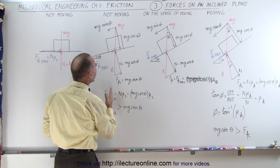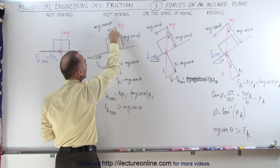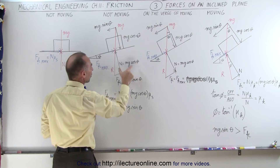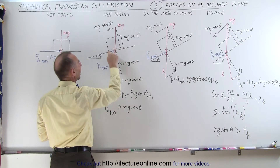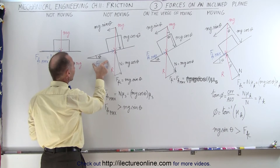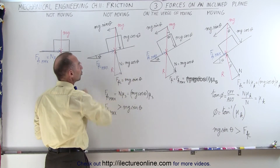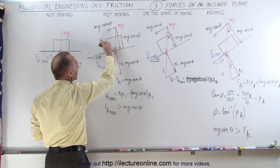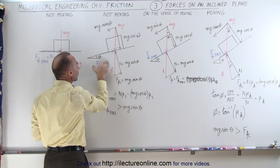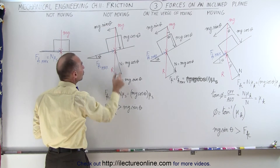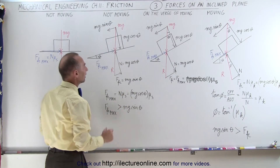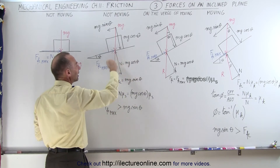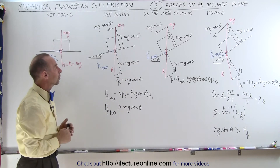The reaction force pushes straight up against the weight. Notice that the reaction force is the vector sum of the normal force plus the friction force between the block and the surface. The maximum friction force is equal to the normal force times mu sub s. Since mg sine theta — the force trying to push the block down the incline — is smaller than the maximum friction force, the friction force is limited to mg sine theta. So this component of the reaction force is mg sine theta, and the other component is the normal force.